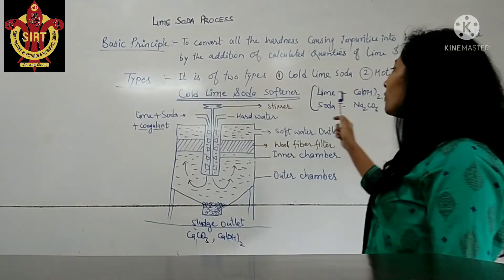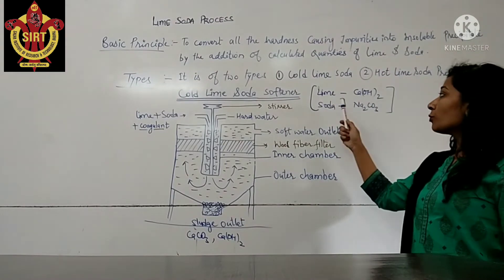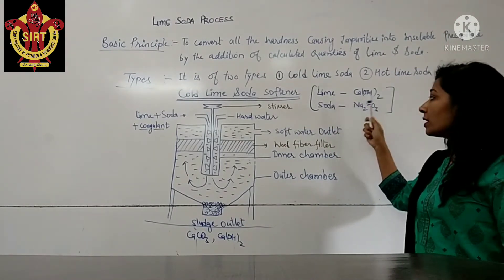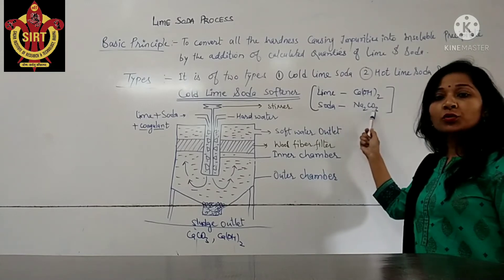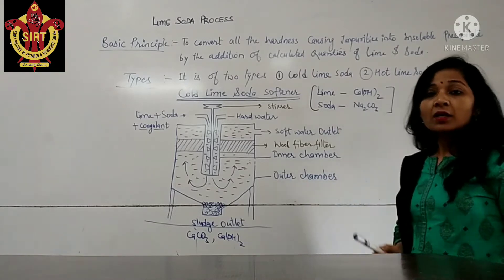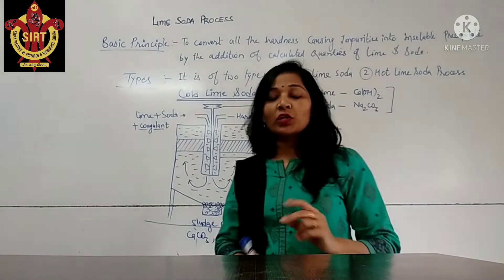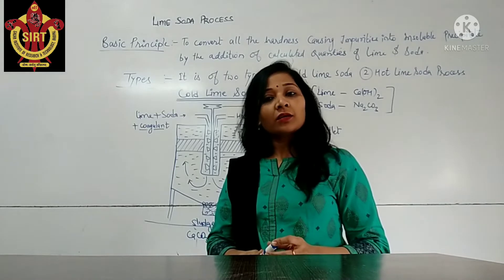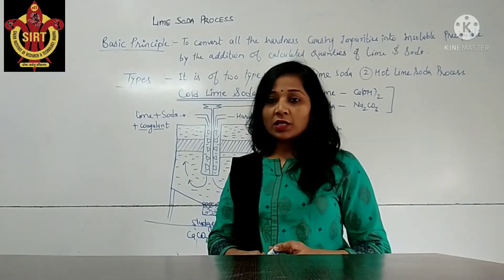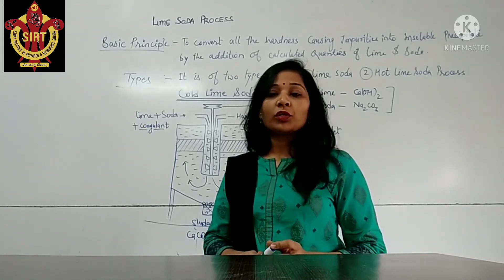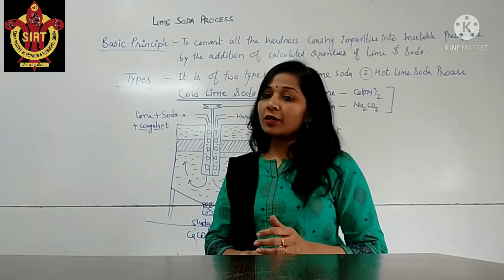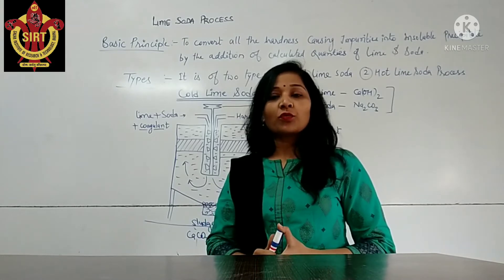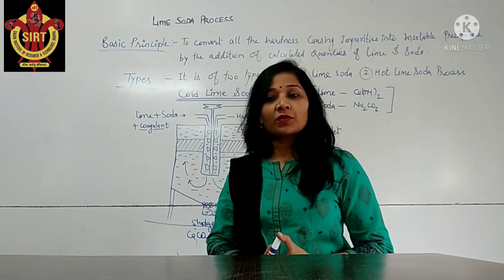Here we will discuss about the formula of lime and soda. The formula for lime is Ca(OH)₂ — that is calcium hydroxide — and soda is Na₂CO₃ — sodium carbonate. Lime soda process is mainly of two types: one is cold lime soda process and the other is hot lime soda process. In today's class we will study about the cold lime soda process with a diagram.